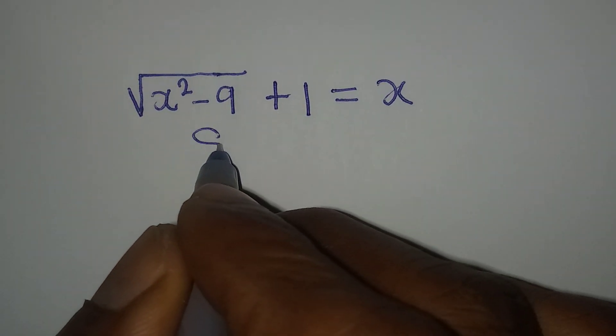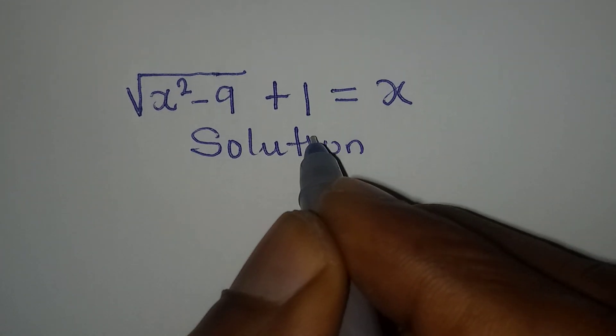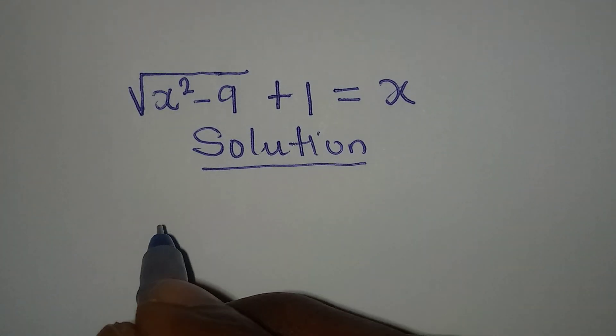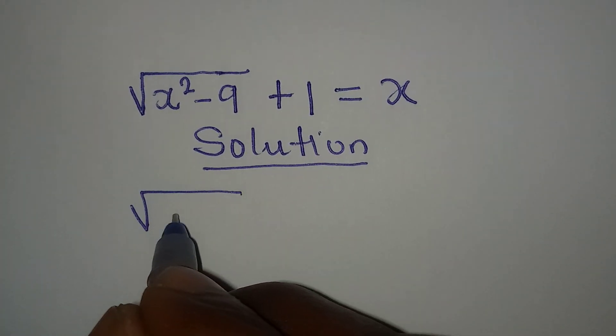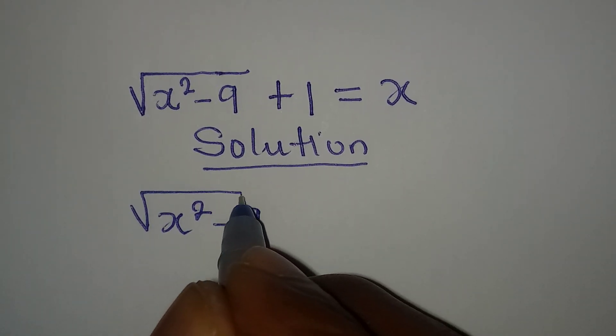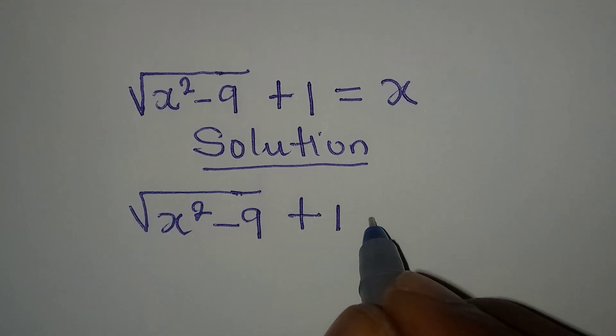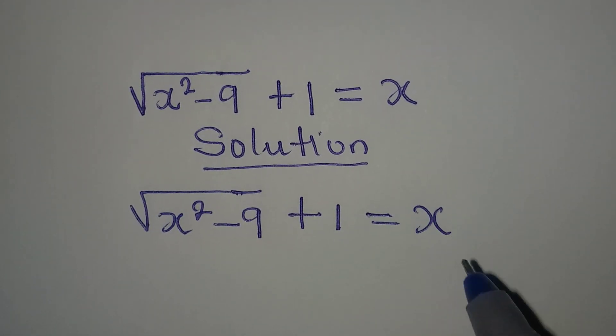Hello everyone, let's provide the solution to this Olympiad Mathematics problem: square root of x squared minus 9 plus 1 equal to x.